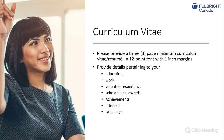The CV should be no more than three pages — not difficult for an undergraduate student. It should include detail on education, work experience, volunteering, scholarships and awards received, achievements, interests, and languages. Community involvement and sports achievements are highly valued by reviewers, so make sure those elements are included.